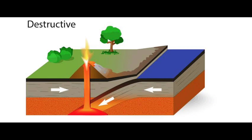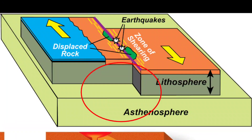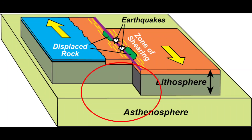The second is the divergent plate margin, where two plates move toward each other in the same direction. This results in the formation of trenches and folded mountains — the Himalayas are also formed due to this activity. Sometimes earthquakes can also occur due to divergent plate margins.